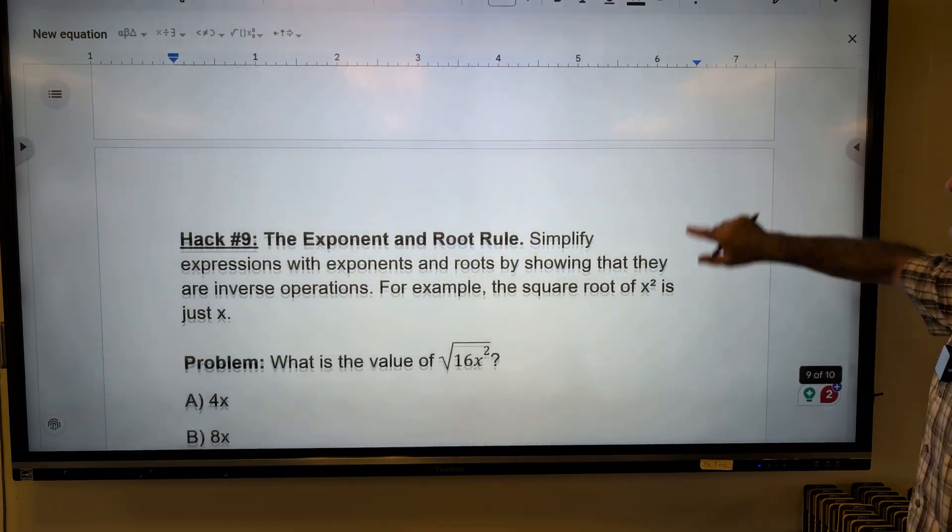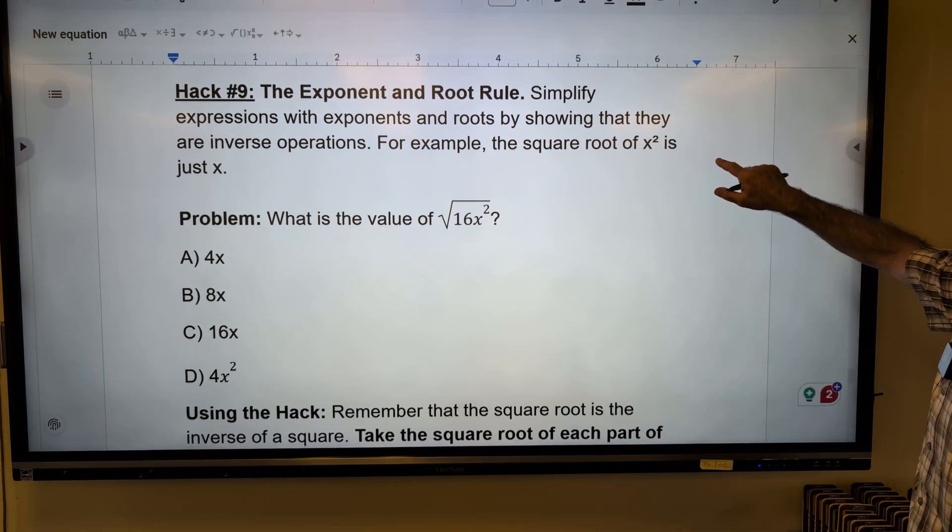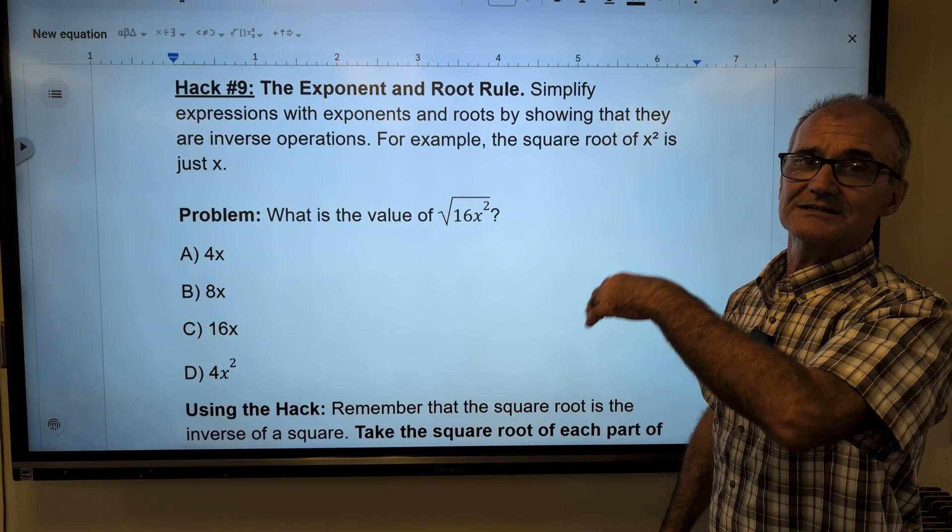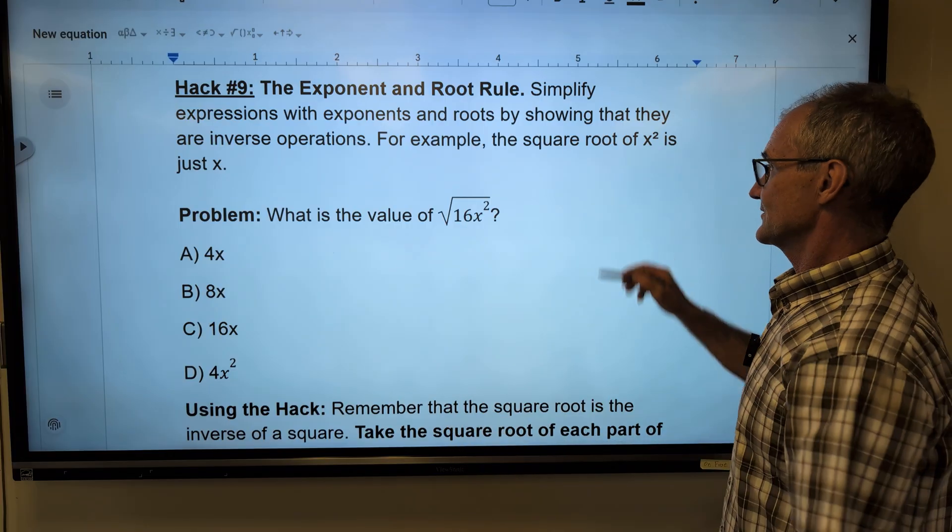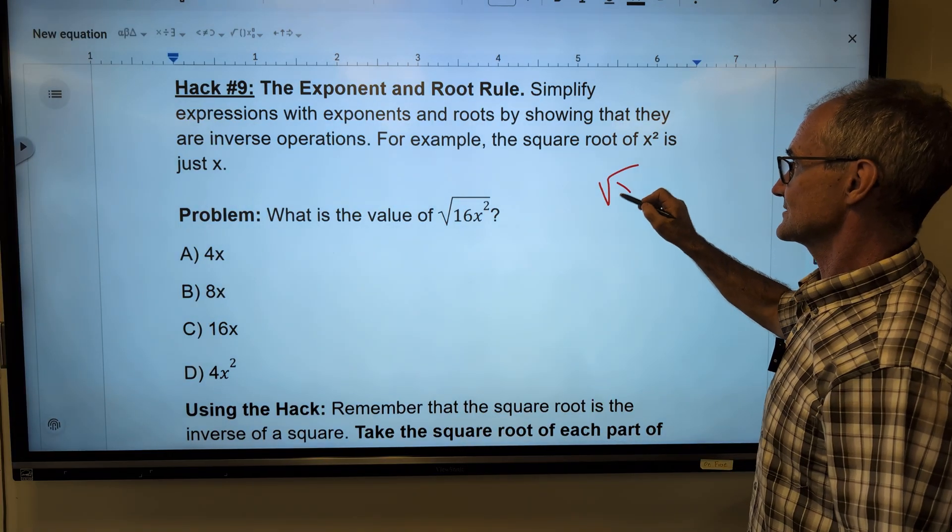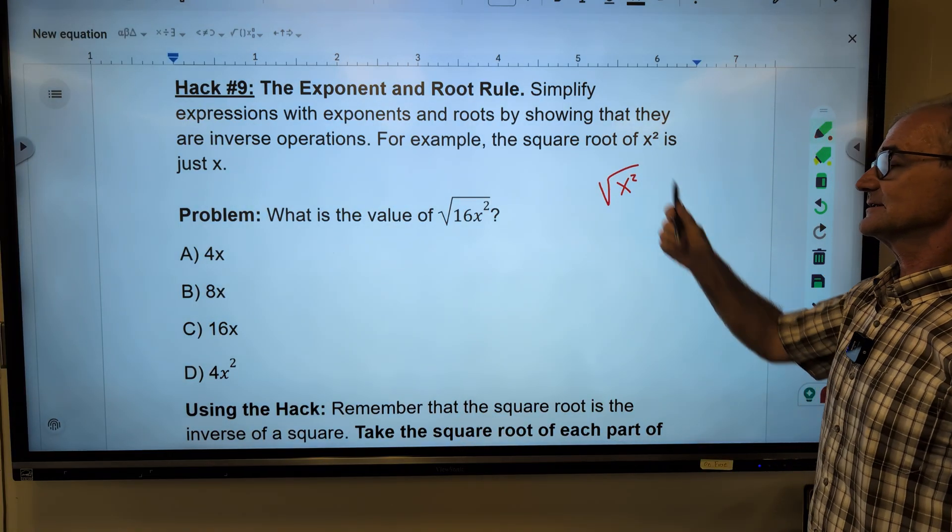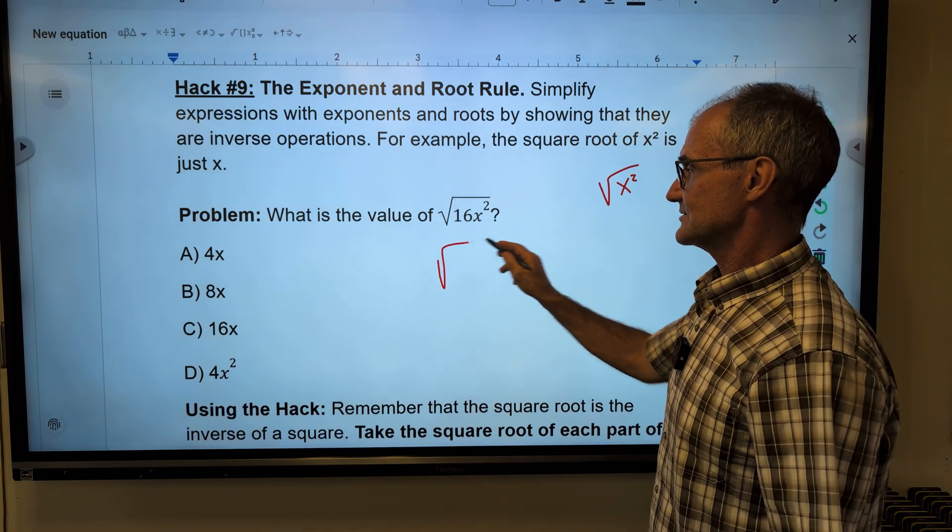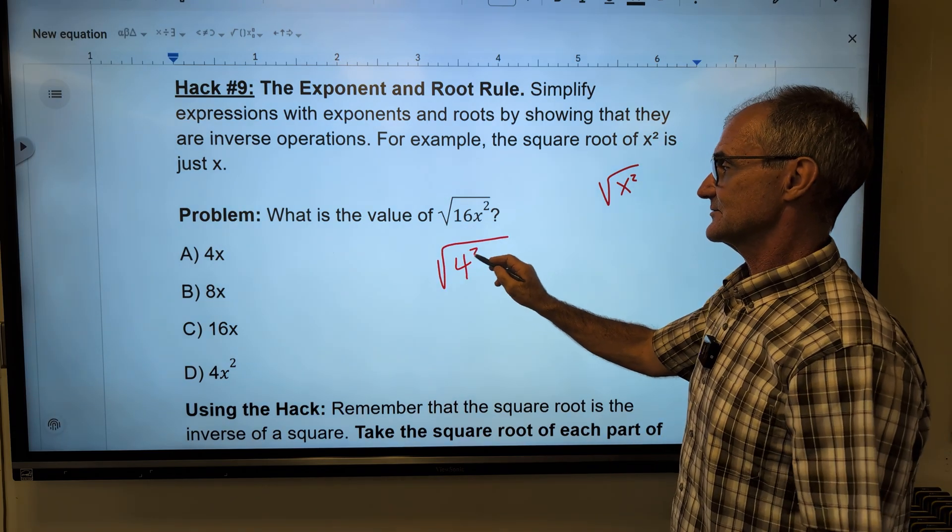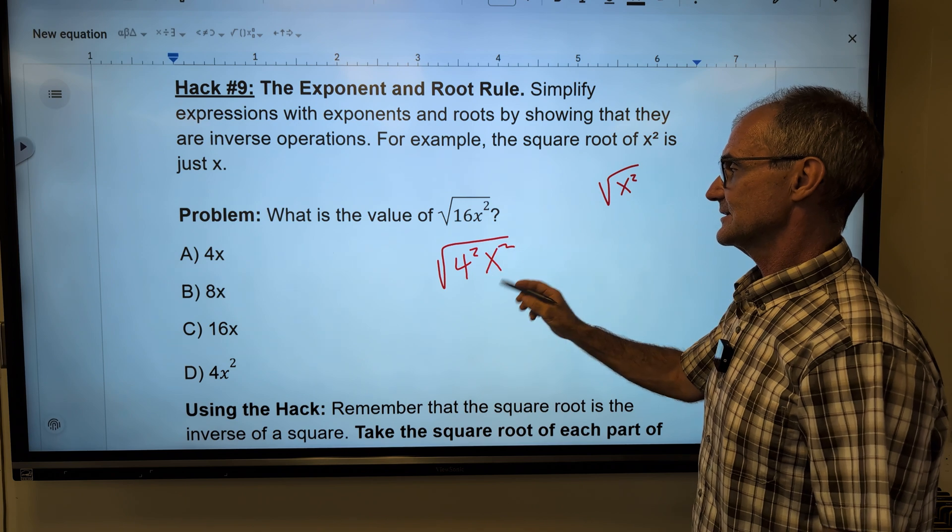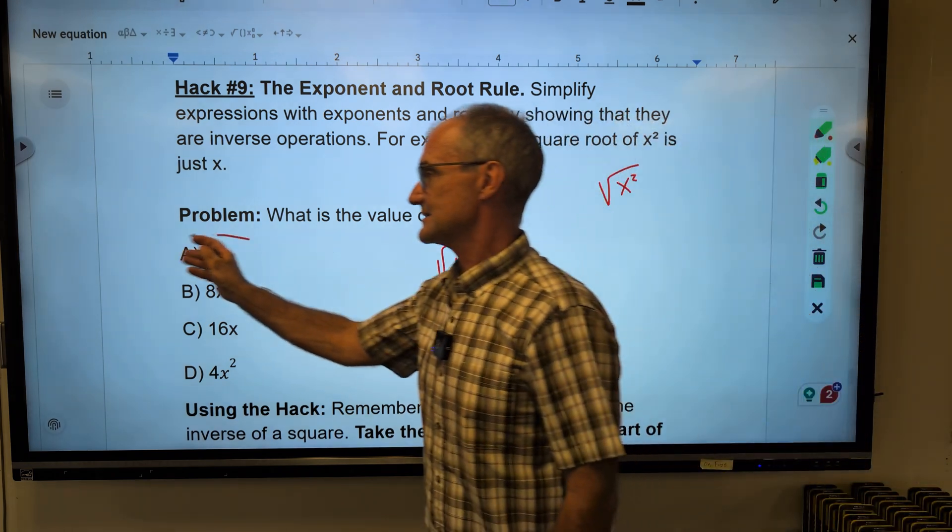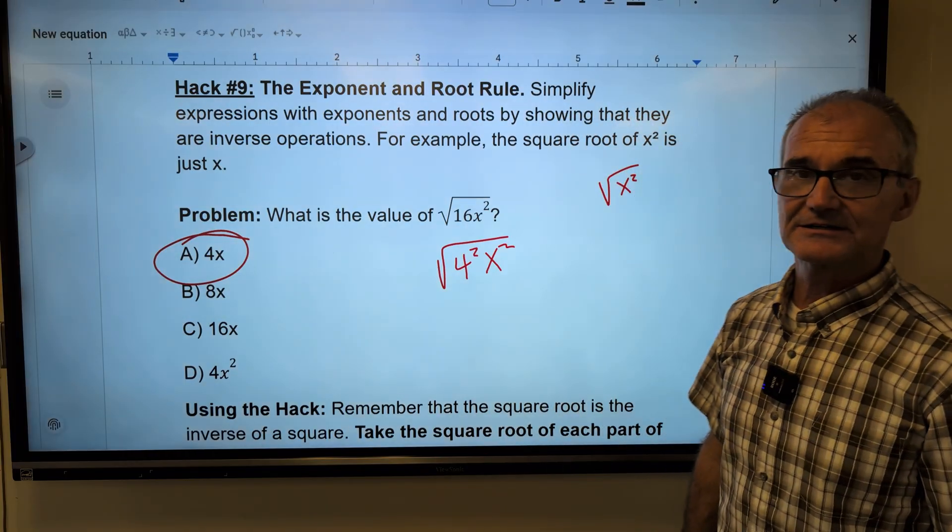Hack number nine, the exponent and root rule. Remember here that a square root undoes a square. So if I have the square root of x squared, the square root undoes that square. Well, that's exactly what I have here. I have the square root. 16 is four squared x squared. That square root undoes that and that, leaving me with four-x. Correct answer, answer A.